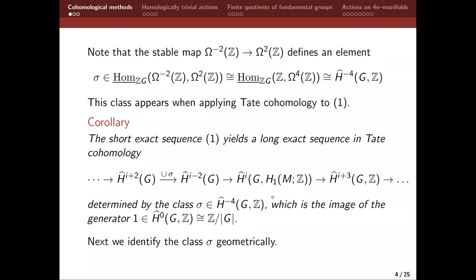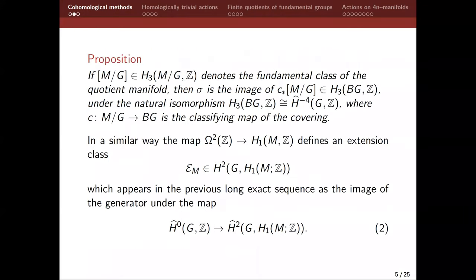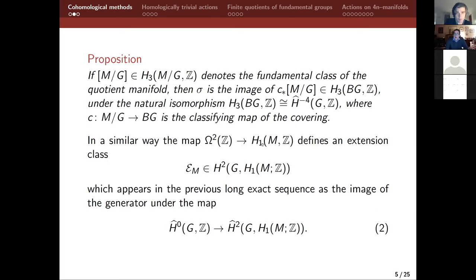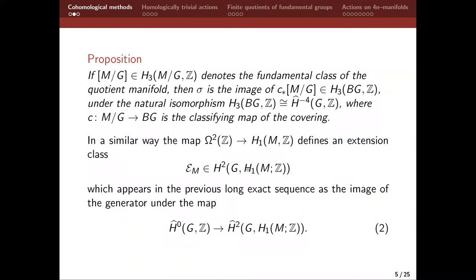Now what about this other part? If I take I equal to two, then I have a map from H zero of G with Z. The generator will map to some element in H two of G with coefficients in H1 of M. We can try to identify that. The mapping cohomology comes from a map from Omega two of Z to H1 of M, and that is going to define an extension class. We write epsilon M in H two of G with coefficients in H1 of M over Z. There's a tautological generator in H two of G with coefficients in Omega two of Z — the universal twofold extension — and that's being mapped to this.